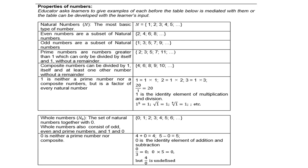2 is 1 times 2, 3 is 1 times 3, 20 is 1 times 20. Therefore, we call 1 the identity element of multiplication and division. Even 1 to the power 5 is 1, the square root of 1 is 1, the cube root of 1 is 1, etc. So 1 is quite a unique number.